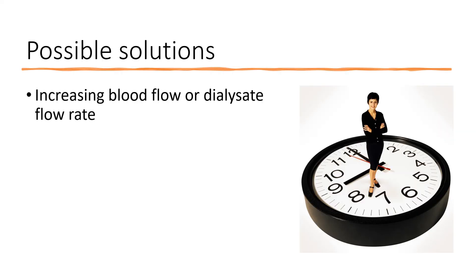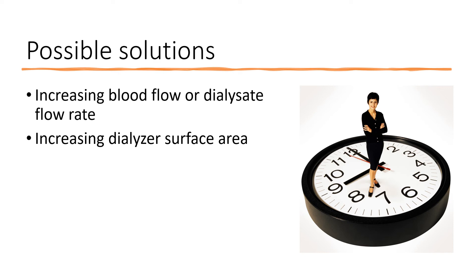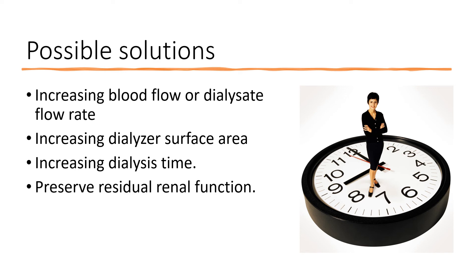What are potential interventions? We can increase blood flow or the dialysate flow rate. We can consider using a larger dialyzer with greater surface area. Increasing dialysis duration is also highly recommended when the unit can accommodate it. And finally, it's very important to preserve residual renal function — how much urine a patient makes is very important for long-term patient performance and survival.